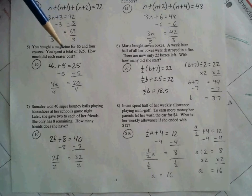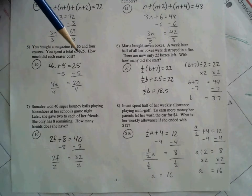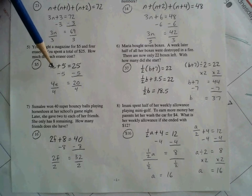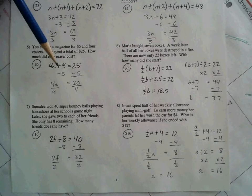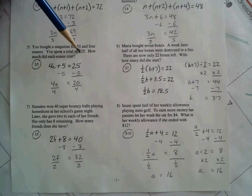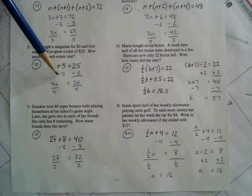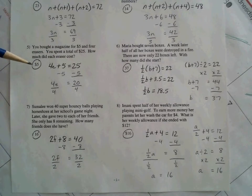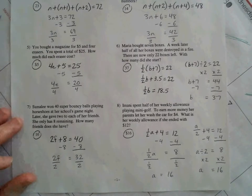So for number 5, it says you bought a magazine for $5 and 4 erasers. You spent a total of $25. So how much did each eraser cost? I used E for eraser cost. You bought 4 of those. So 4 times how much each eraser cost, plus the $5 you spent for the magazine. And all that should have been a total of $25. So from here, once you do the steps, subtract 5 and divide by 4, 5 should have been your final answer on that problem.